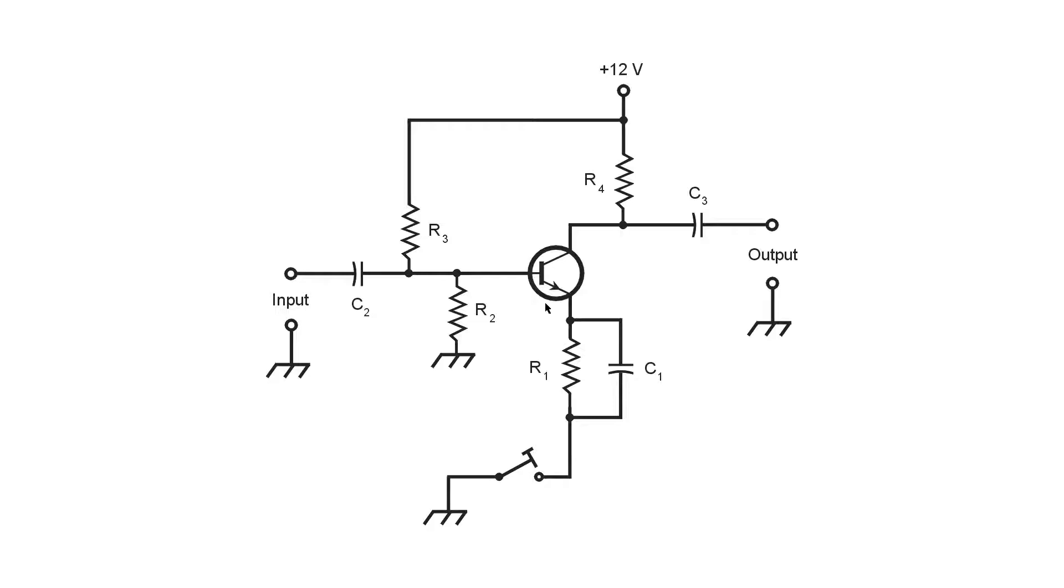An NPN bipolar transistor in this case is keyed at the emitter simply by disconnecting and connecting the emitter to ground. When the key is down, the circuit performs as a low-gain broadband amplifier.